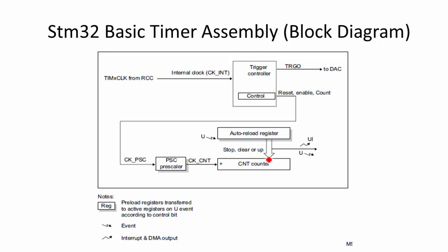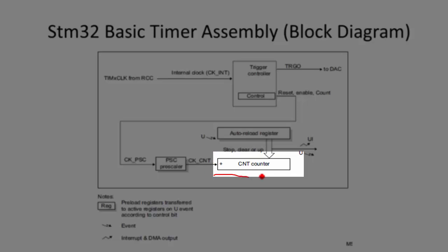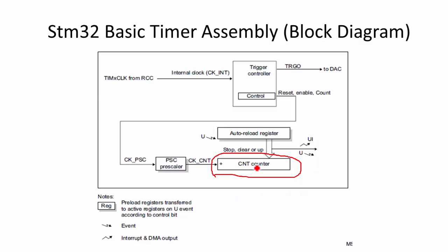If you take a look into this block diagram, it is very simple. Here you can see that the counting takes place in what we call the counter register, and this is actually 16-bit. For basic timers, the counter is 16-bit, and counting is powered by a clock that we call the count clock.